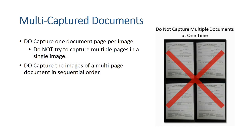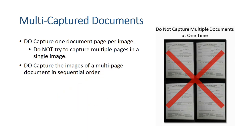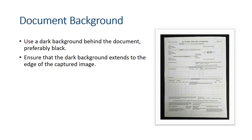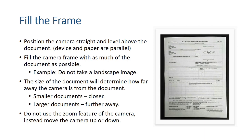Capture one document per page per image — do not try to capture multiple pages in a single image. Capture images of a multi-page document in sequential order. Use a dark background behind the document, preferably black, and ensure it extends to the edge of the image. Position the camera straight and level above the document so the device and the paper are parallel. Fill the camera frame with as much of the document as possible — don't take a landscape image. The size of the document will determine how far away the camera is: for smaller documents put the camera closer, for larger documents pull it further away. Do not use the zoom feature; instead move the camera up or down. Use both hands to hold the camera steady to avoid motion blur, as a slightly tilted camera may produce out-of-focus areas.